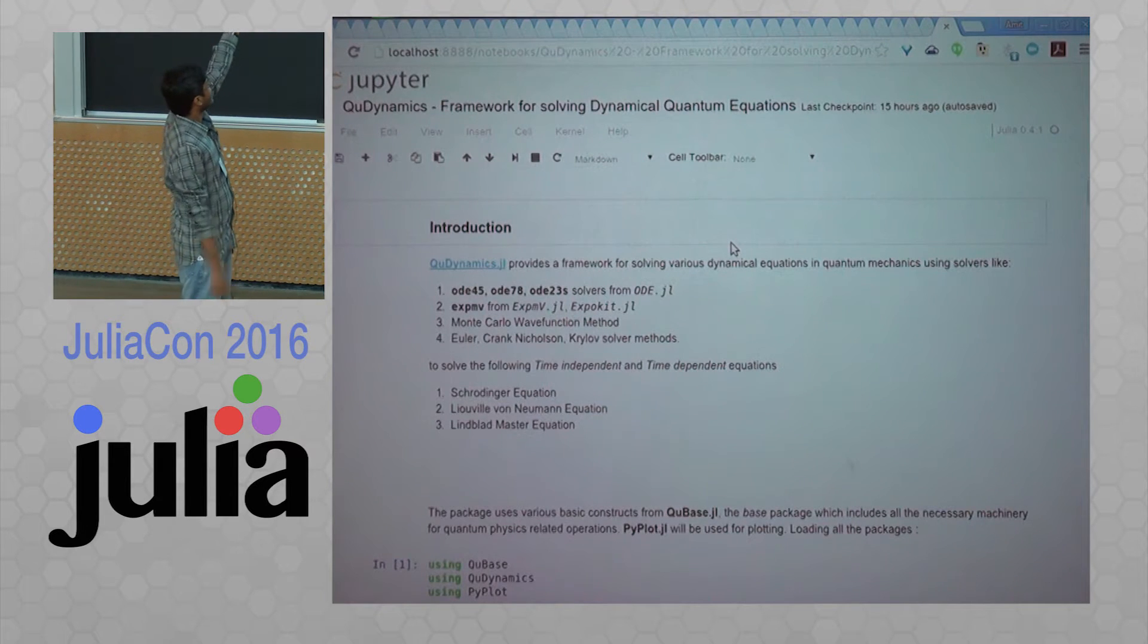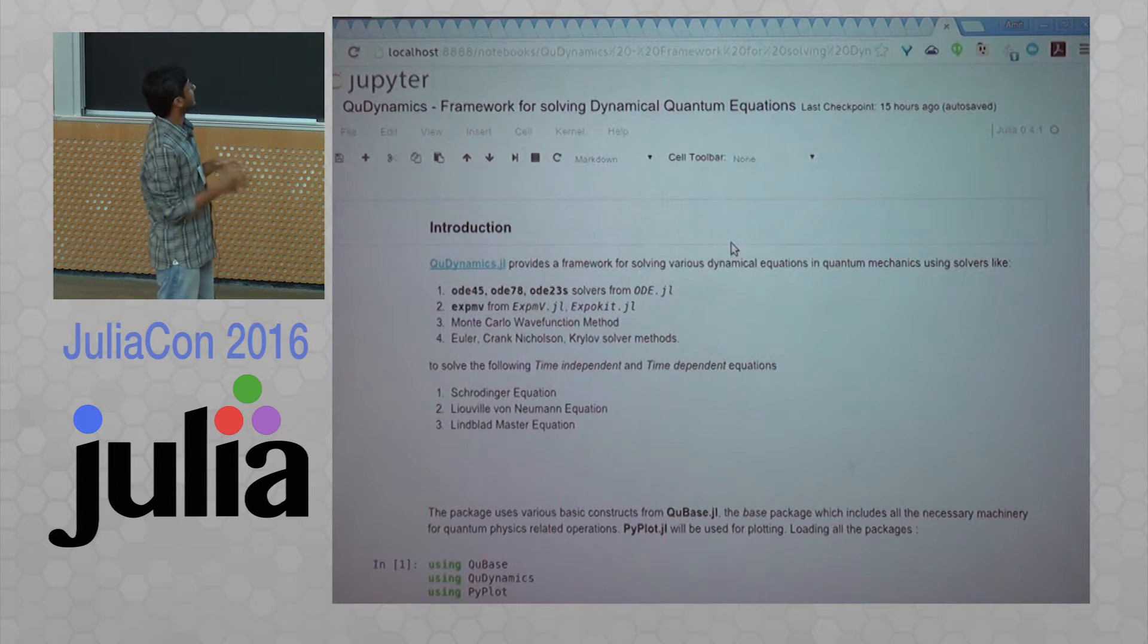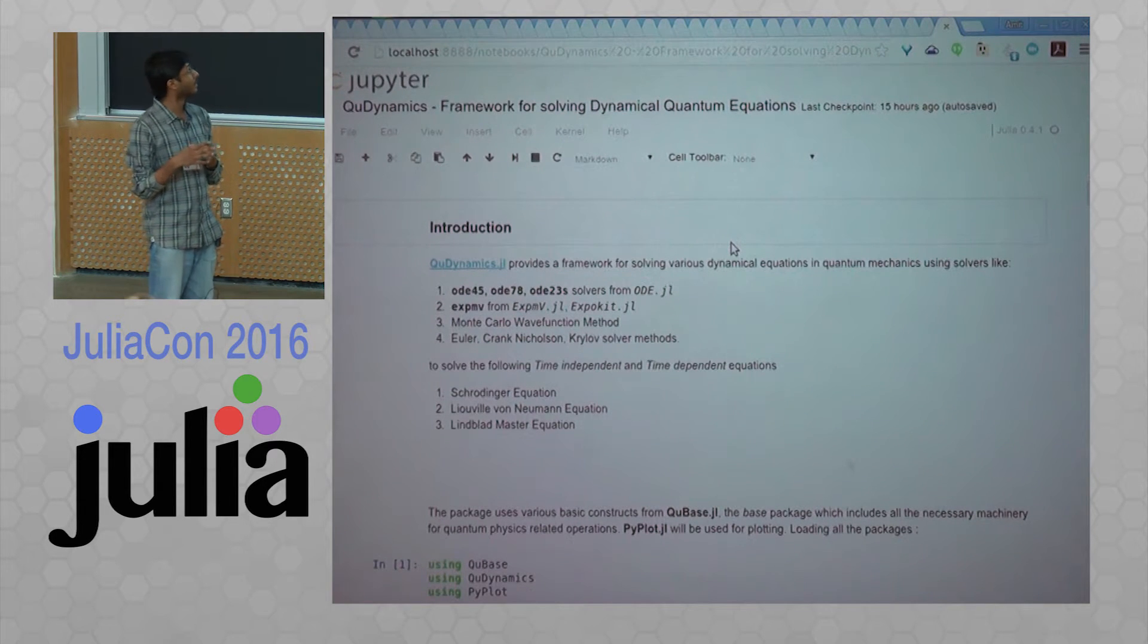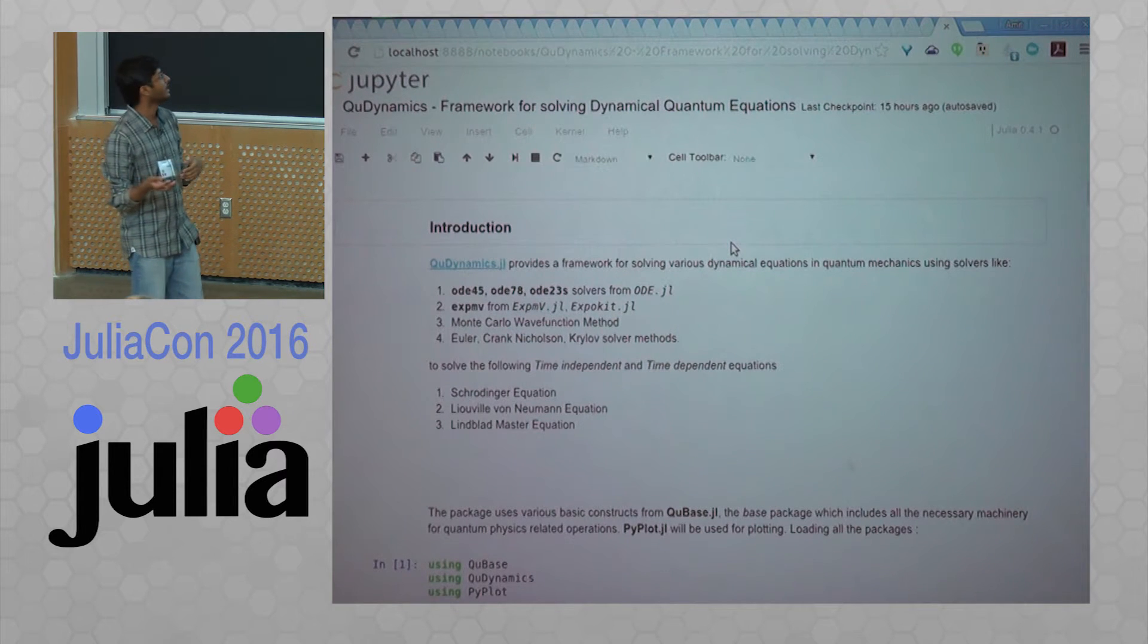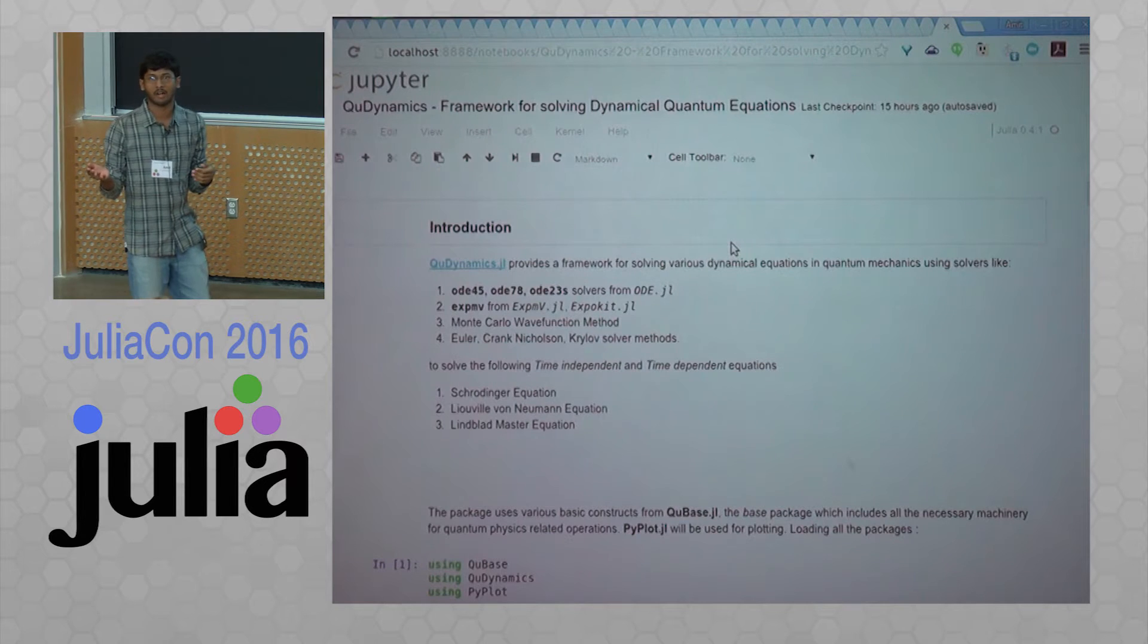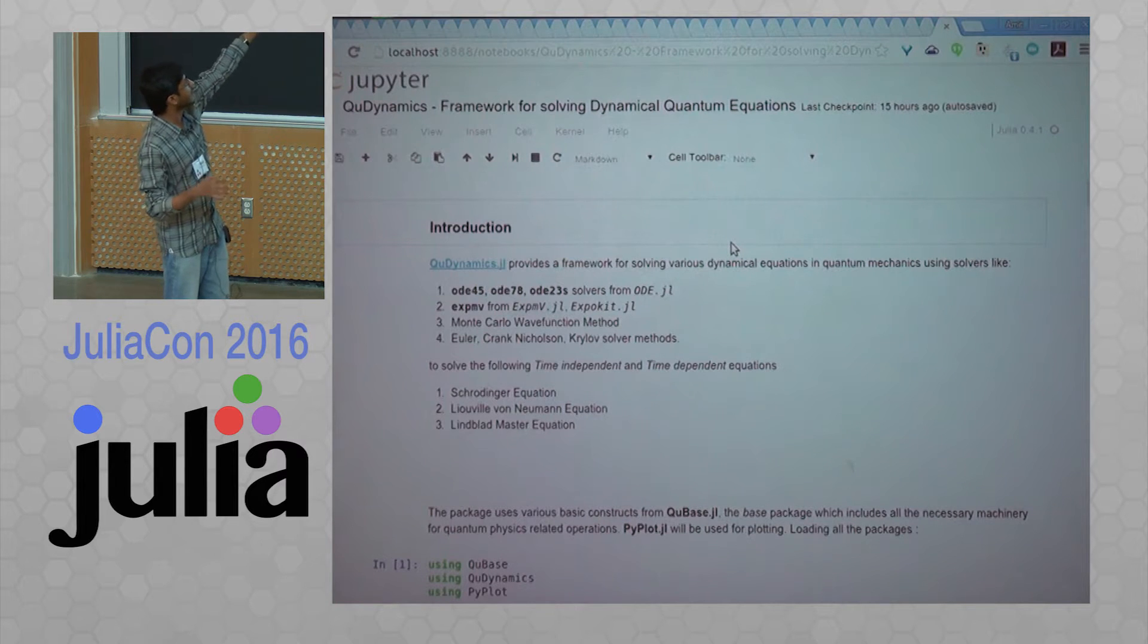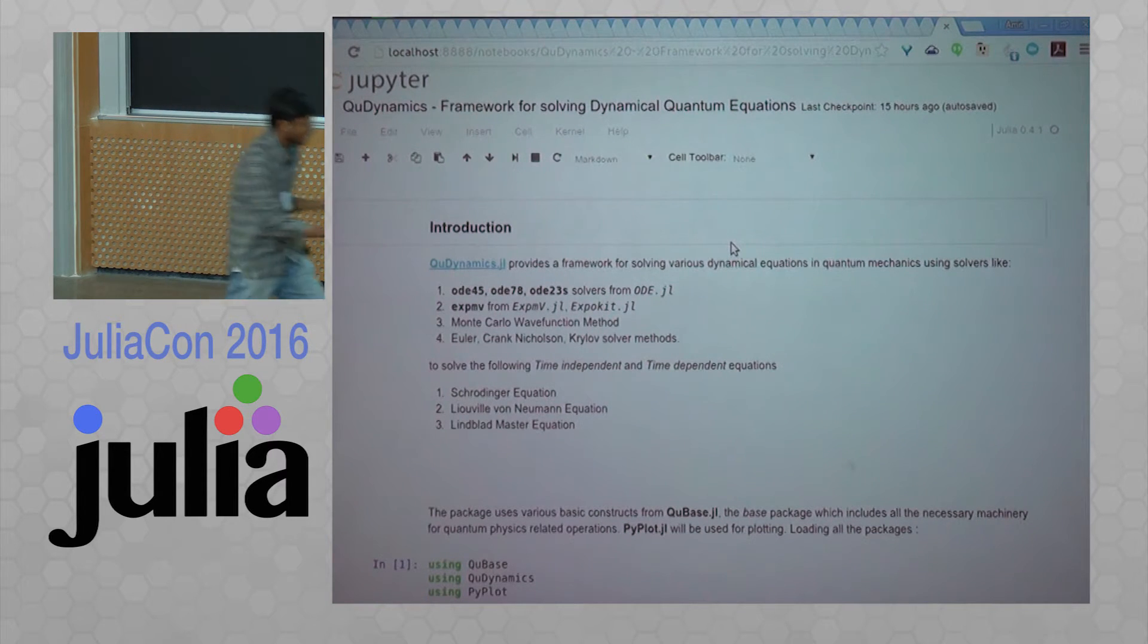So basically, this is how these equations define the state evolution. For every system, you have the Hamiltonian and then you have an initial state, and then we basically solve the Schrodinger equation. That is the variance of the Schrodinger equation for different kinds of systems. Different kinds of equations define different kinds of systems.